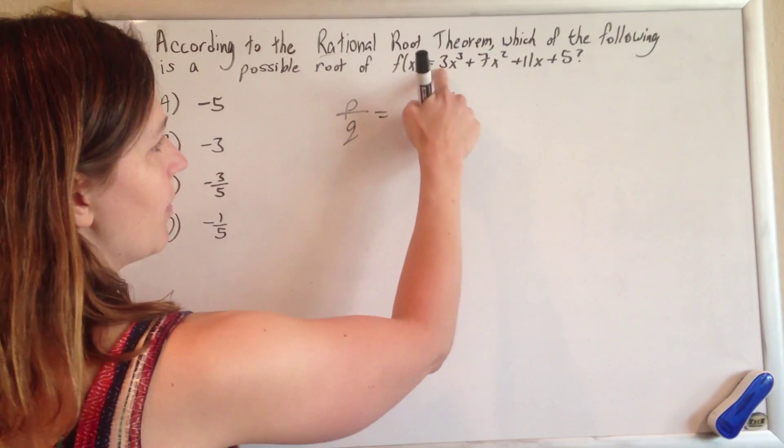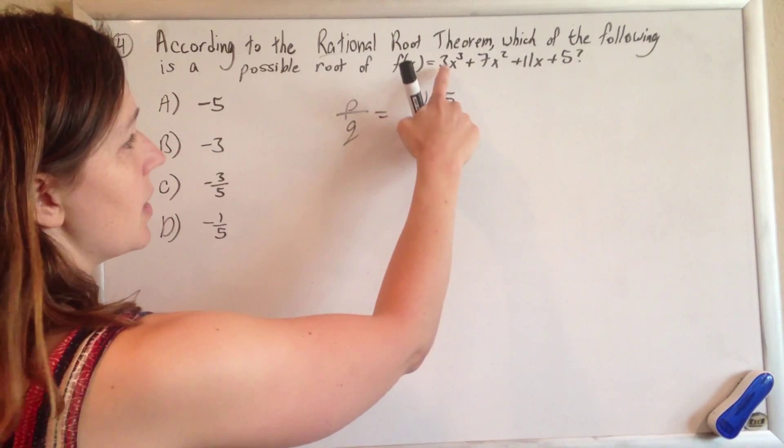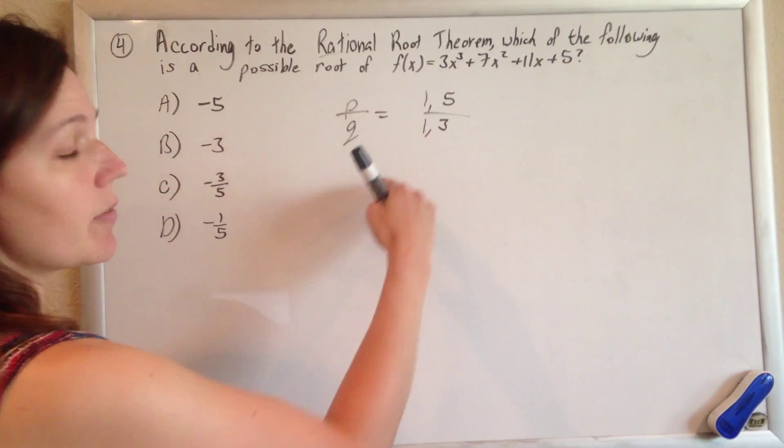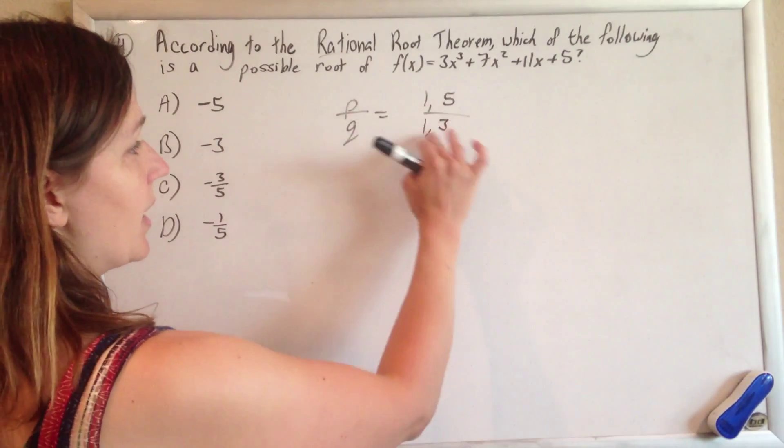And q are factors of this leading coefficient, so the leading coefficient is 3, so factors of 3 are 1 and 3. And you go ahead and make every single possible combination you can out of these.